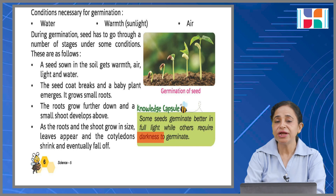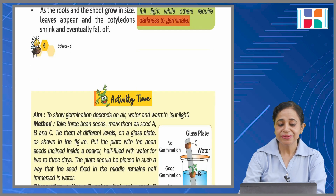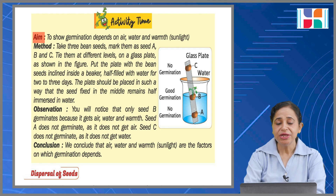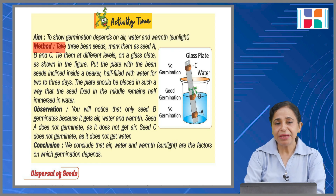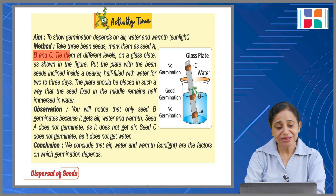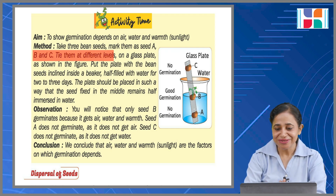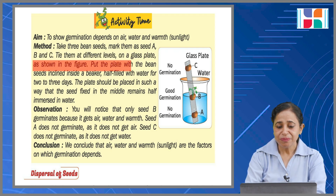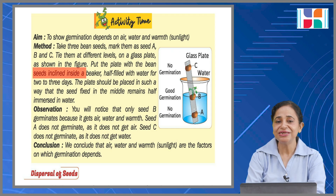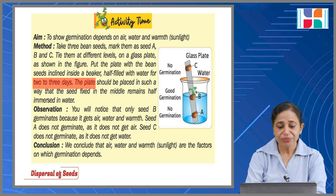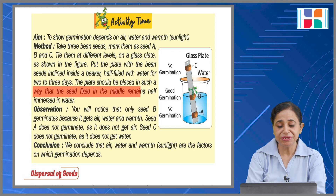Activity time. Aim: to show that germination depends upon water, air, and warmth. Method: take three bean seeds, mark them as seed A, B, and C. Tie them at different levels on a glass plate as shown in the figure. Put the plate with the bean seeds inclined inside a beaker half-filled with water. The plate should be placed in such a way that the seed fixed in the middle remains half immersed in water.